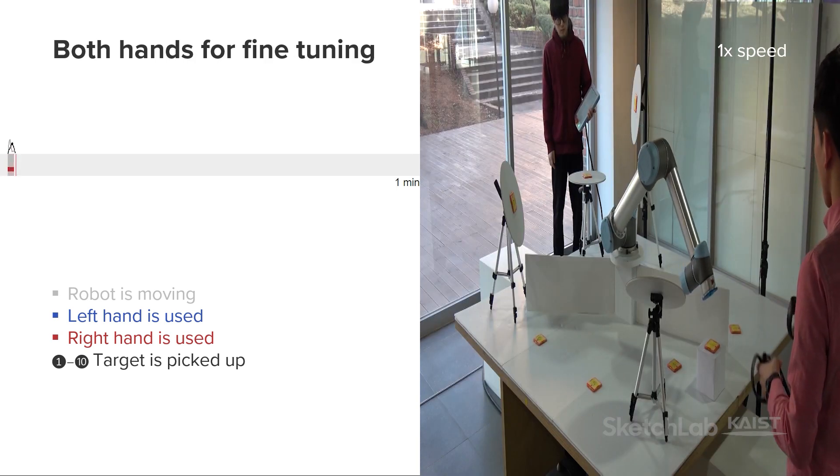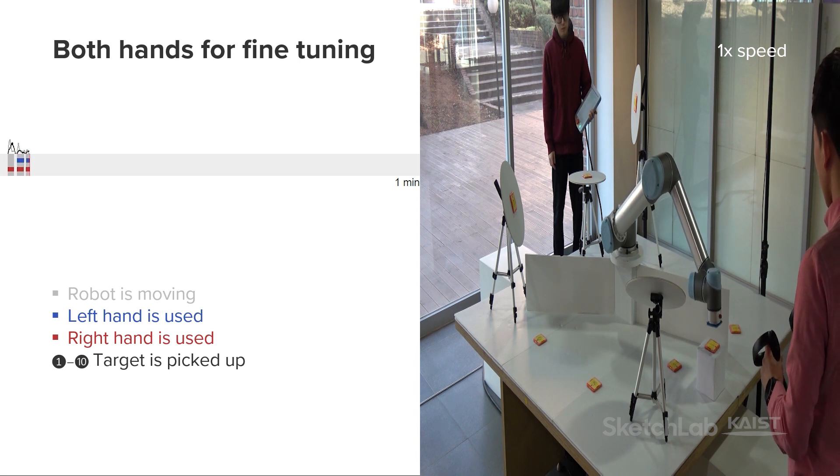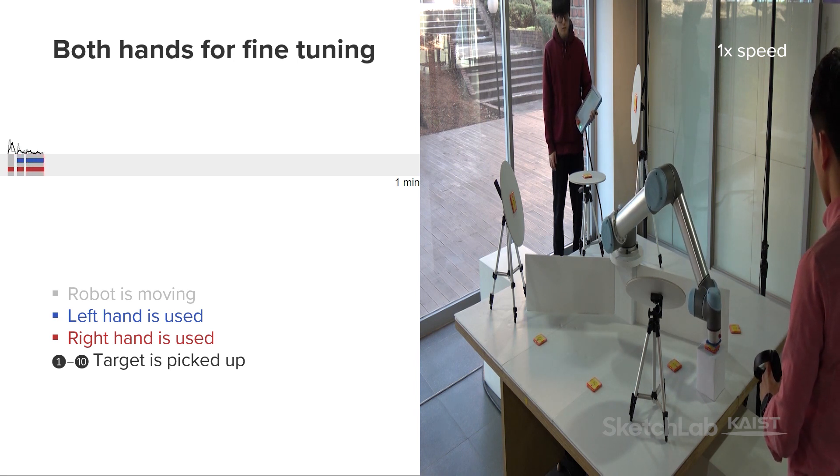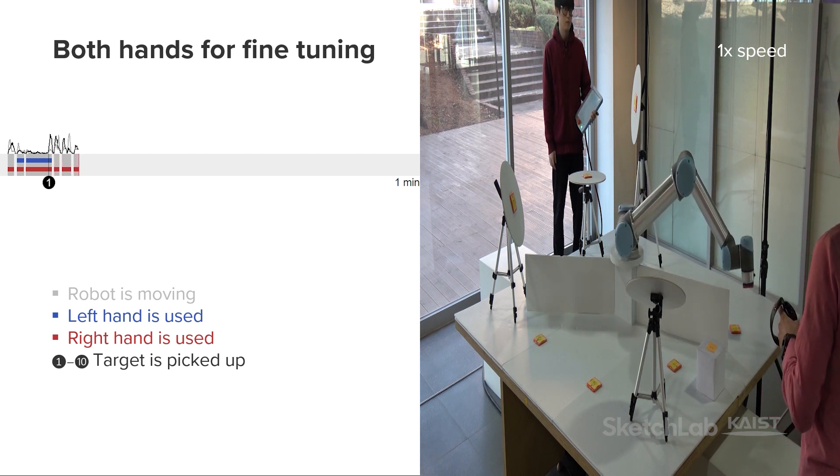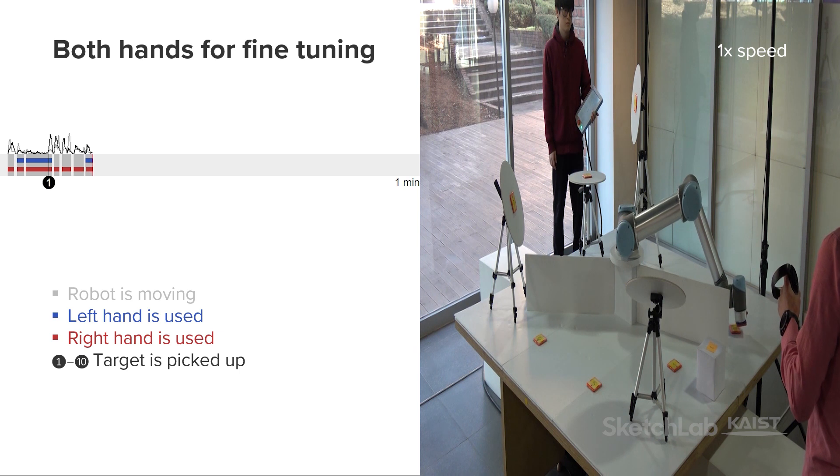Second, many participants also used both hands to make fine adjustments, especially when carefully aligning the end effector to the target, shortly before picking it up. Here, it is shown as concurrent blue and red bars, just before the numbered circles.